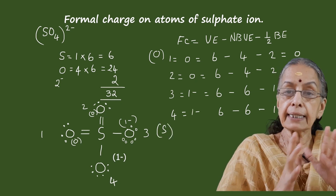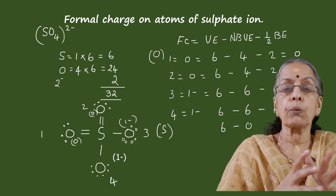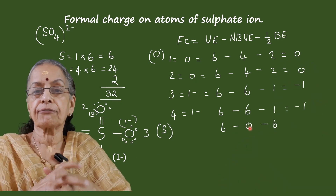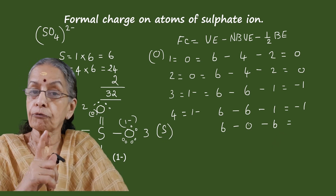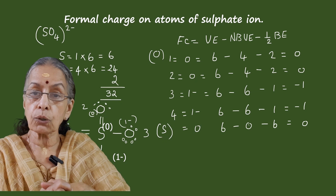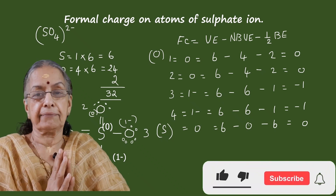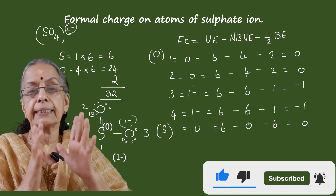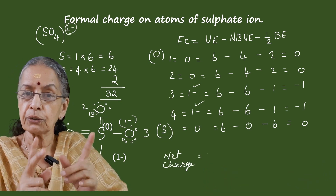For the sulfur atom: valence electrons = 6, non-bonding electrons = 0 (all electrons of sulfur are used up), bonding electrons = 4+4+2+2 = 12, half of that = 6. So 6 − 0 − 6 = 0. The formal charge on sulfur is zero. The whole ion gets a charge of two negative: oxygen atoms number three and four each have a −1 charge, totaling −2. Net charge equals two negative — verified.